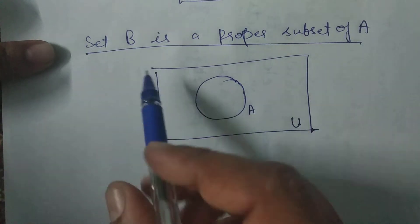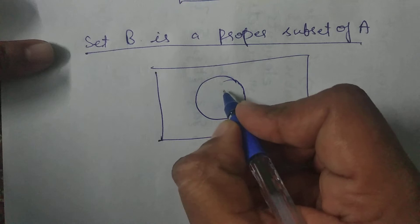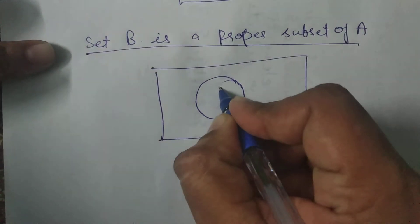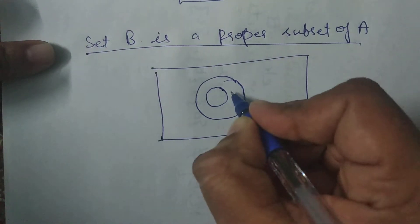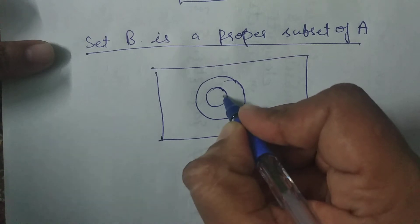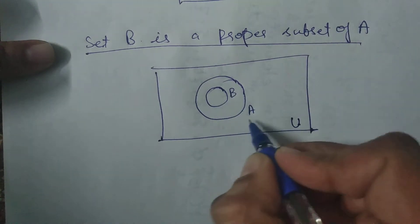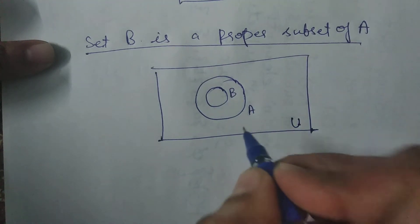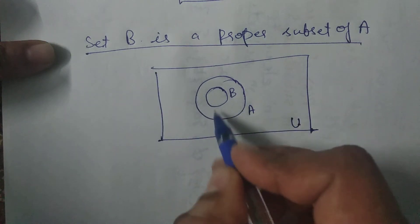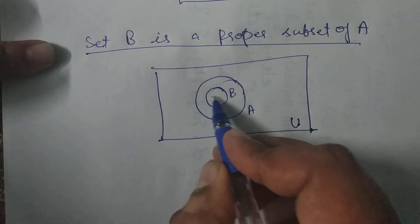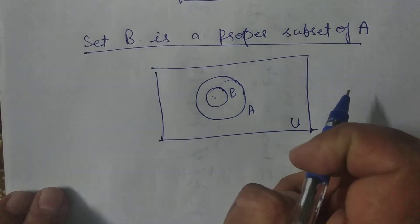Now since set B is a proper subset of set A, I have drawn another circle inside the first circle. This inner circular area represents set B. So this Venn diagram represents that set B is a proper subset of set A.